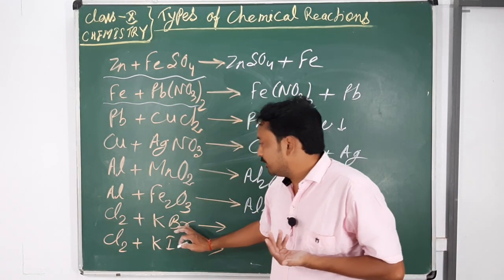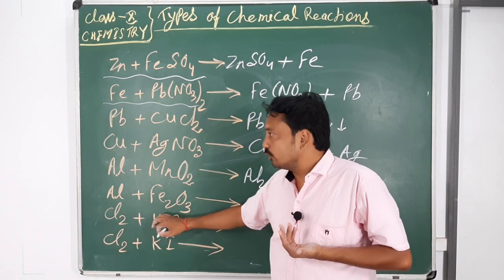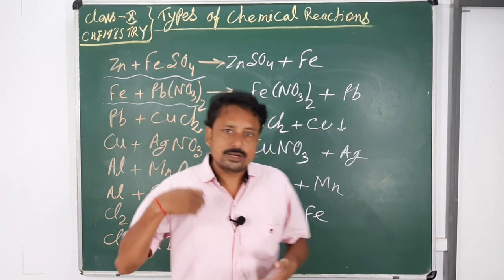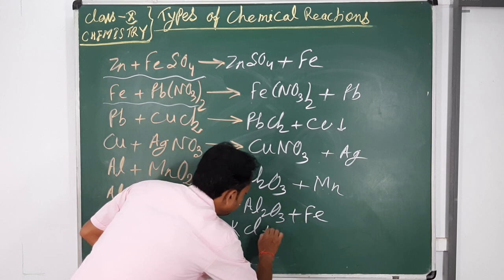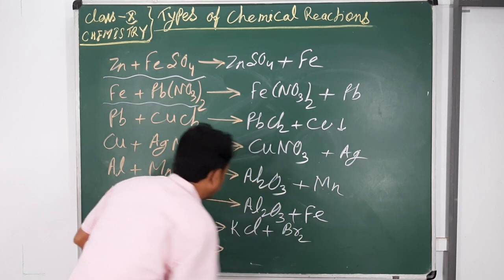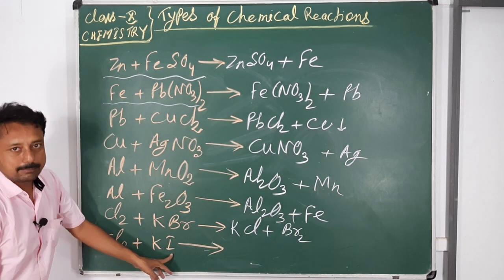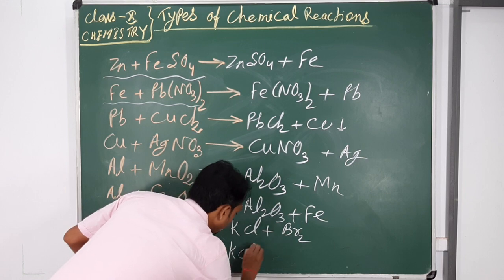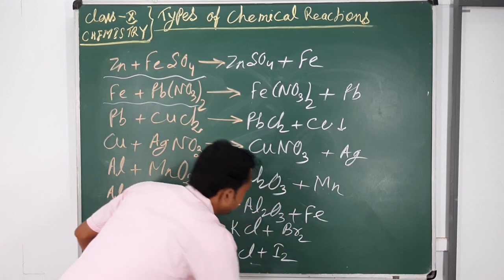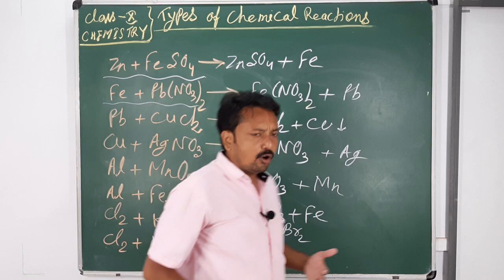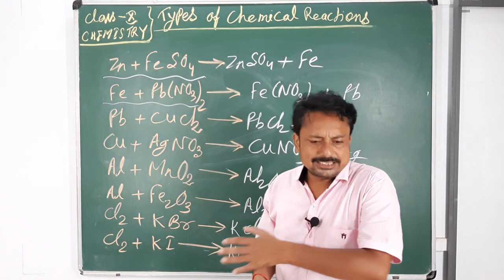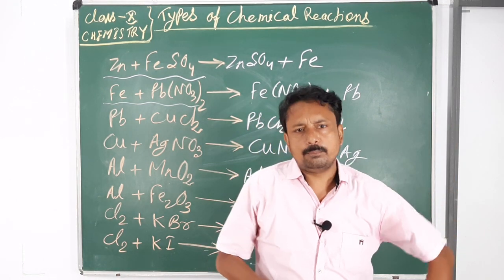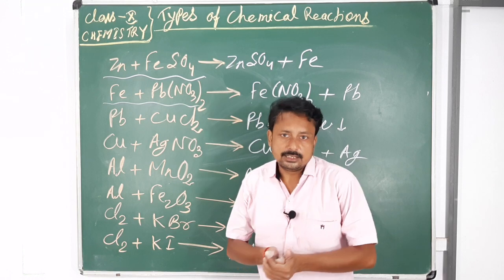Displacement reactions also apply to non-metals. Because chlorine is more reactive than bromine, if we take a KBr solution and add chlorine, it displaces bromine, forming KCl and bromine vapour. Similarly, chlorine reacts with potassium iodide — since chlorine is more reactive than iodine, it forms KCl and iodine is released. In all these reactions, one higher reactive element displaces a lower reactive element from their complex and forms a new complex.